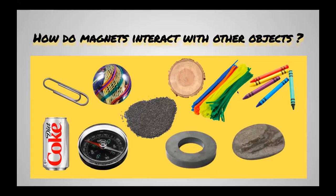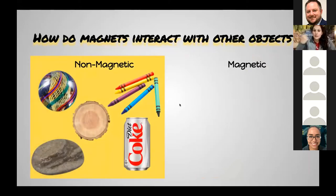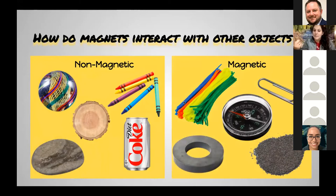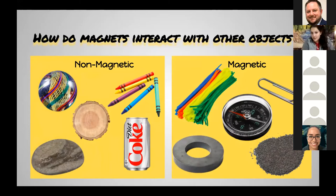Let's look at our conclusions based on our results. The non-magnetic items were the glass marble, the piece of wood, the crayon, the aluminum soda can, and the rock. The magnetic items were the pipe cleaner, the compass, iron filings, paper clip, and the ring magnet. I want you to tell a friend: what do you think makes those magnetic items different? Hopefully you told your friend that all those magnetic items are metal — they all contain metal. The pipe cleaner has a little wire inside, and the rest obviously contain metal.